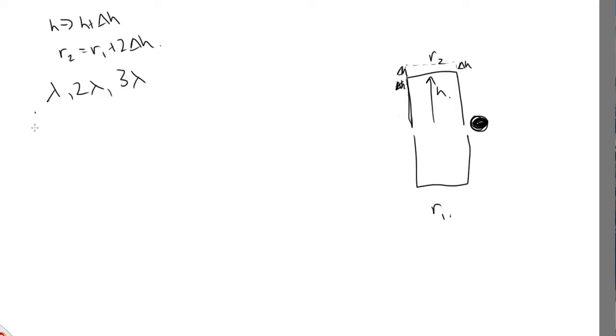So here, maximum sound when the path difference, which is r2 minus r1, is equal to n lambda, any integer number of wavelengths, where n is an integer. And now r2, we've said,